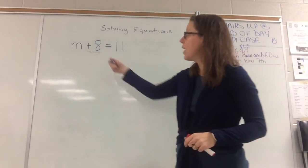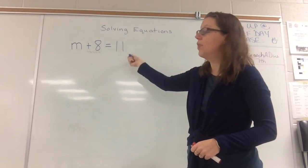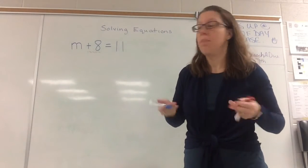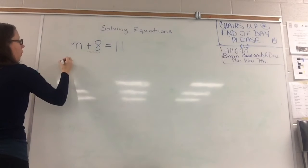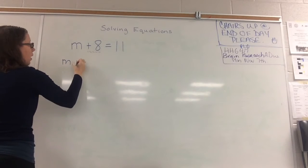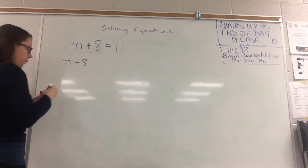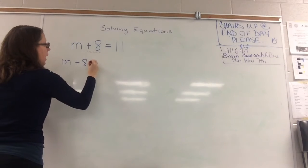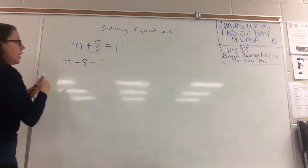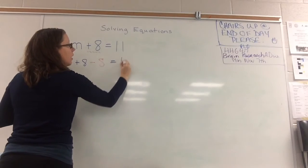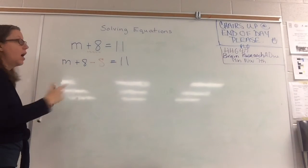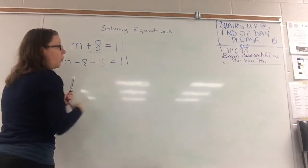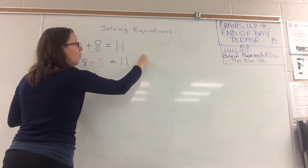But if I subtract 8 from this side, I have to subtract 8 from this side to keep the equation balanced. So I'll write m plus 8 minus 8 equals 11. I subtracted 8 here, so I have to subtract 8 over on this side.